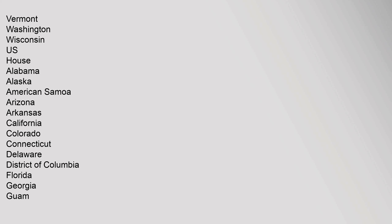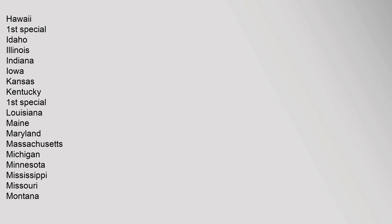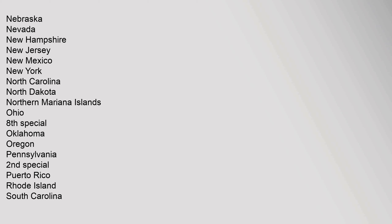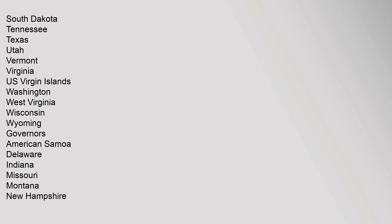U.S. House elections: Alabama, Alaska, American Samoa, Arizona, Arkansas, California, Colorado, Connecticut, Delaware, District of Columbia, Florida, Georgia, Guam, Hawaii (first special), Idaho, Illinois, Indiana, Iowa, Kansas, Kentucky (first special), Louisiana, Maine, Maryland, Massachusetts, Michigan, Minnesota, Mississippi, Missouri, Montana, Nebraska, Nevada, New Hampshire, New Jersey, New Mexico, New York, North Carolina, North Dakota, Northern Mariana Islands, Ohio (8th special), Oklahoma, Oregon, Pennsylvania (second special), Puerto Rico, Rhode Island, South Carolina, South Dakota, Tennessee, Texas, Utah, Vermont, Virginia, U.S. Virgin Islands, Washington, West Virginia, Wisconsin, Wyoming.